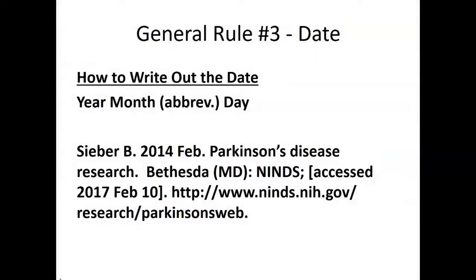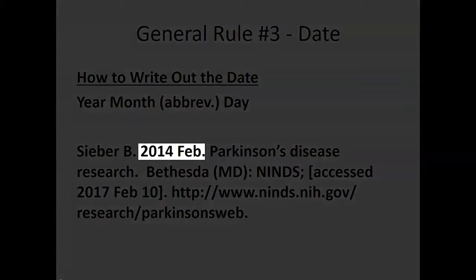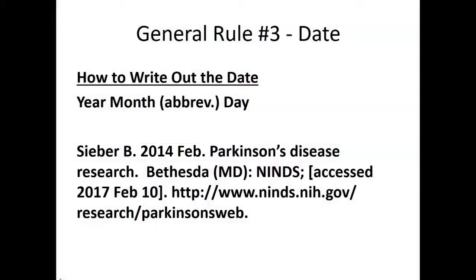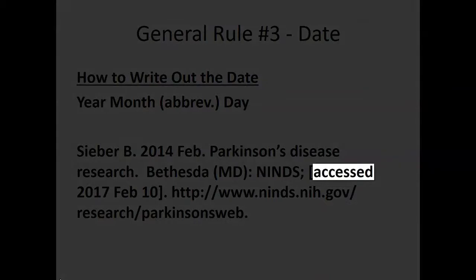Dates are written in a specific order: year, month, day. Months are always abbreviated to three letters. Even short months, like July, are abbreviated to J-U-L. This citation example is for a website. The webpage was updated in February 2014, so you see both the year and abbreviated month after the author's name. In CSE, you also include the year-month-day that you viewed the website, which can be seen in this example as the access date.